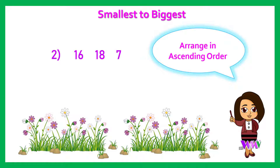Coming to the next question: 16, 18, 7. The ascending order for these numbers will be 7, 16, 18.